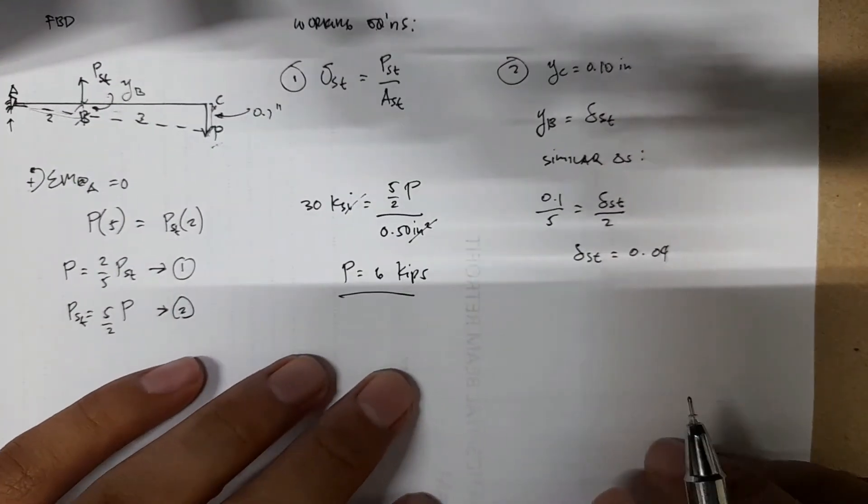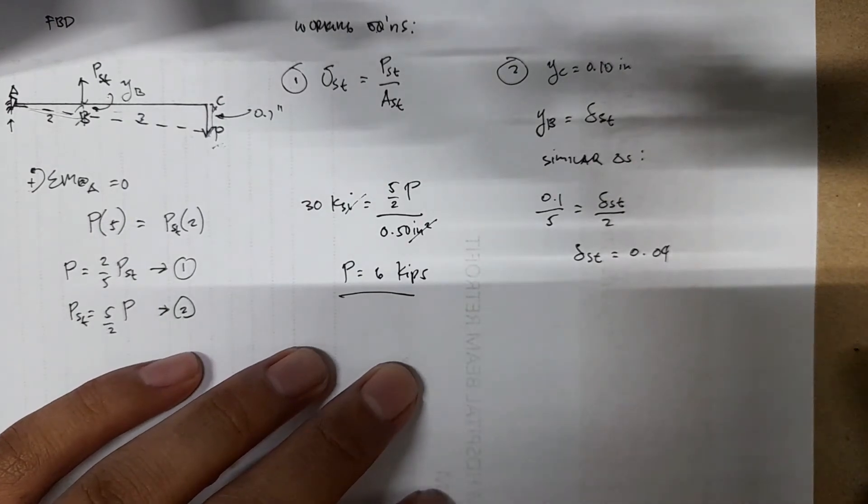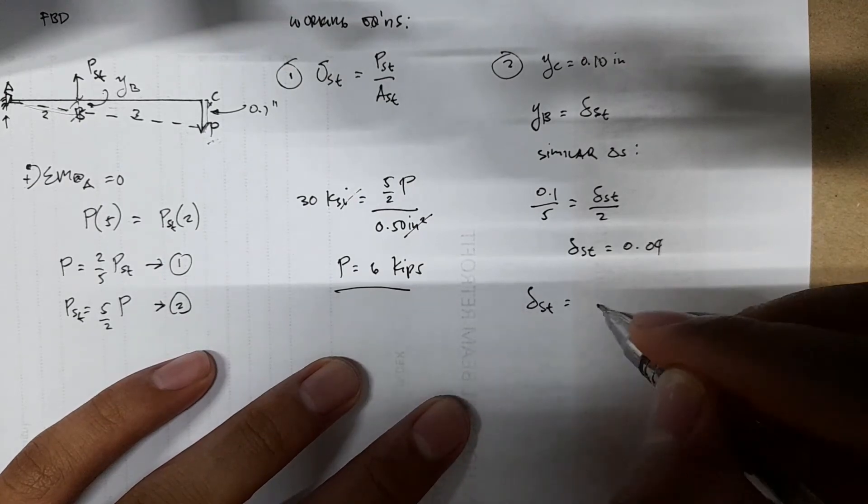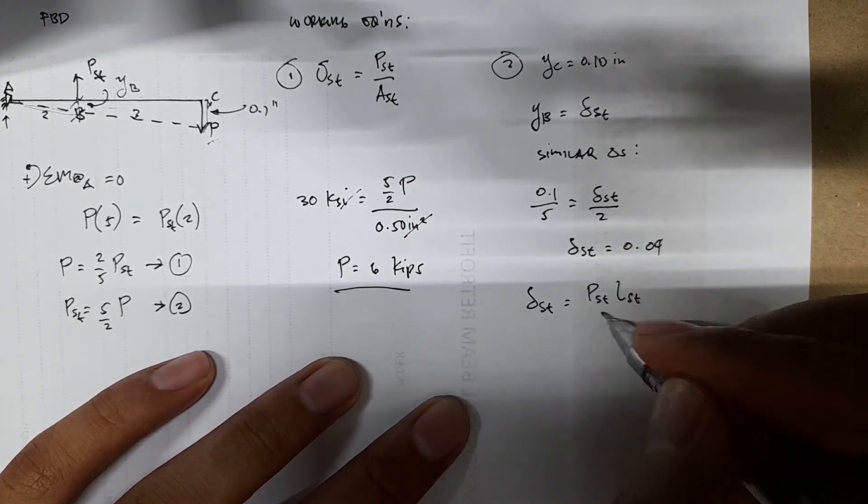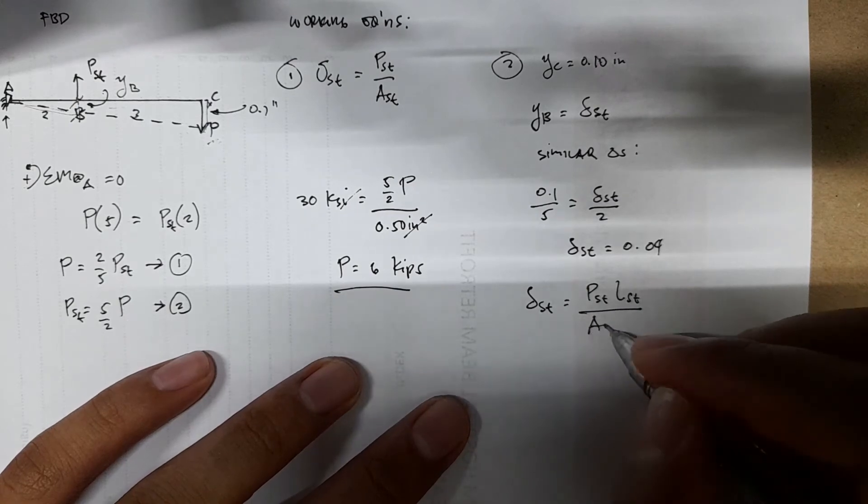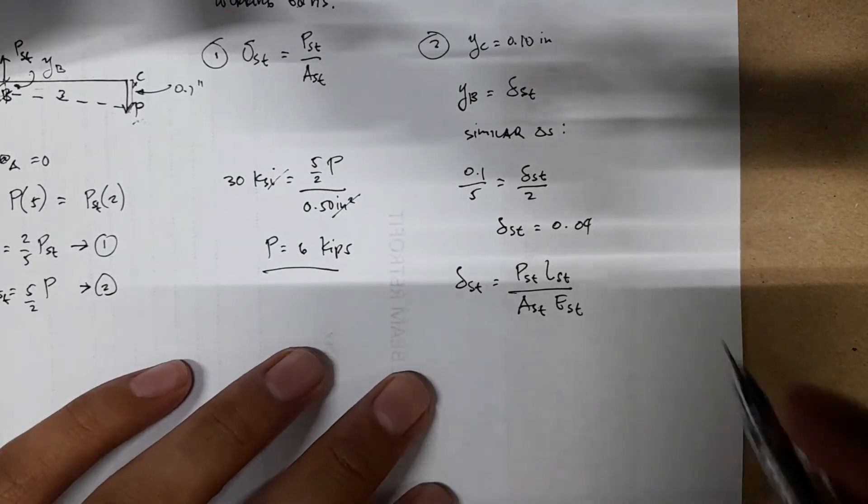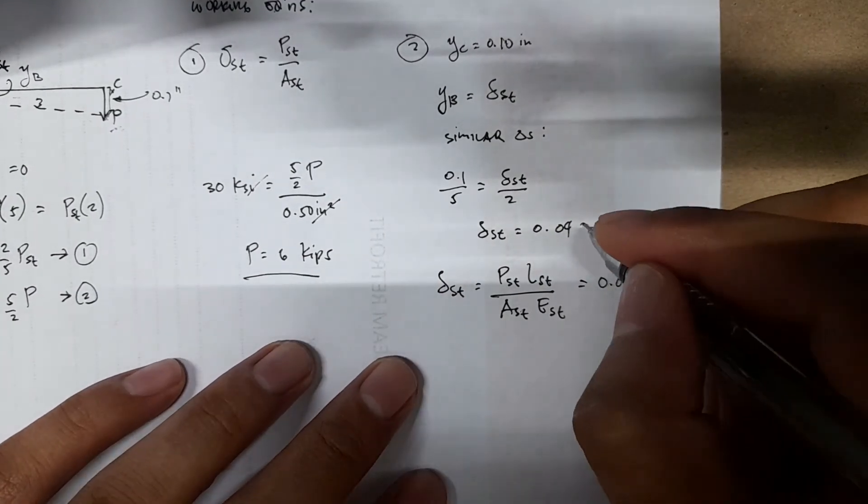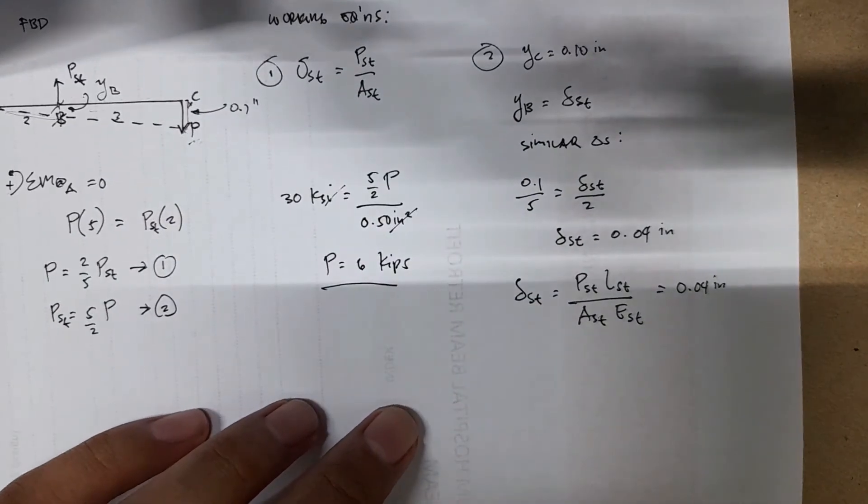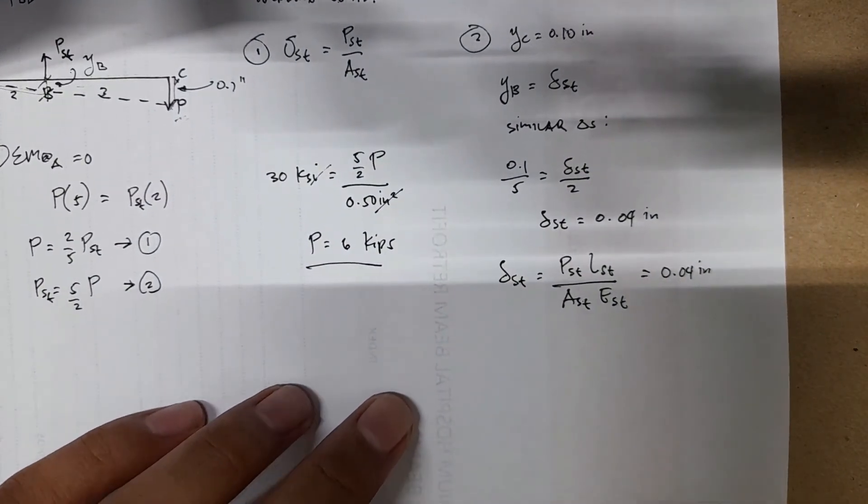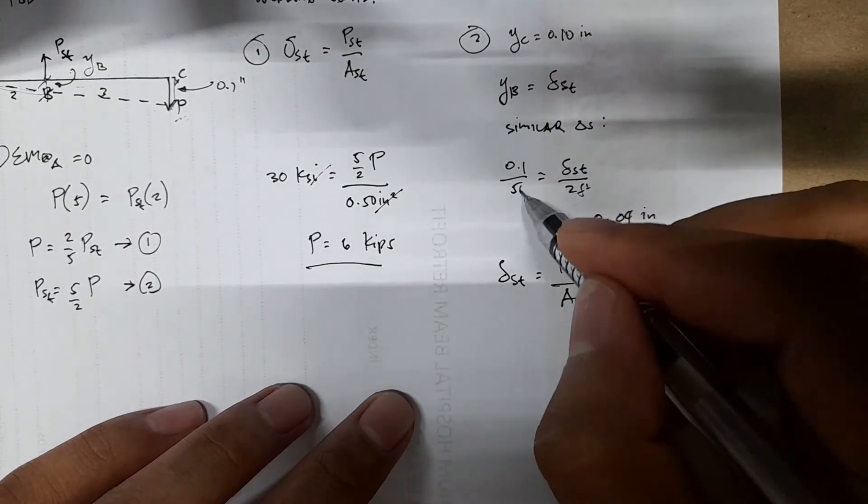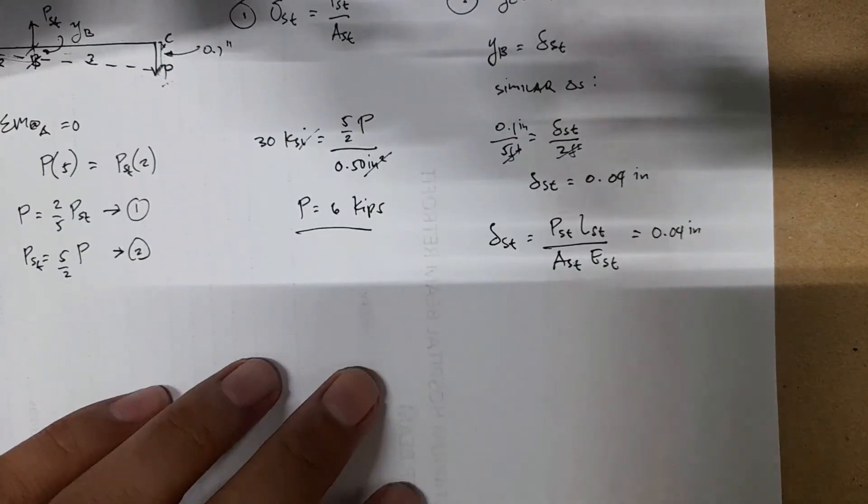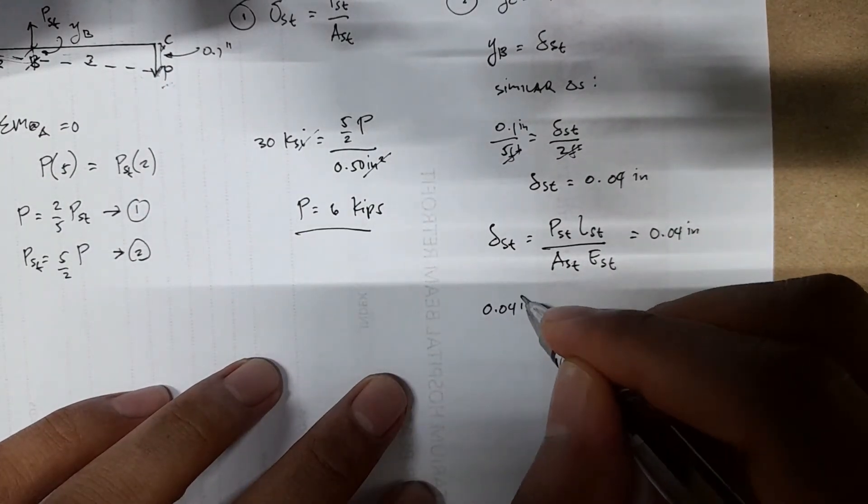We can use the axial deformation equation. For deformation, you have PST times LST over AST times EST, all equal to 0.04 inches. Because this is feet, we have 0.04 inches equals PST times 4 feet.